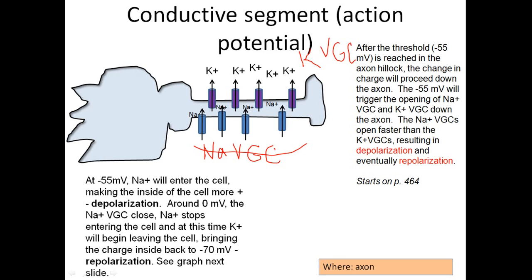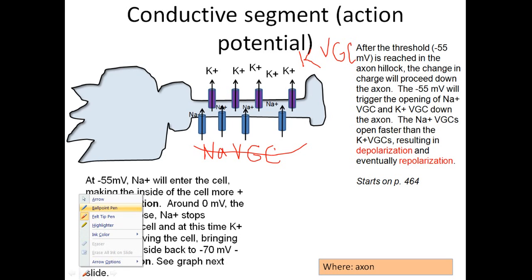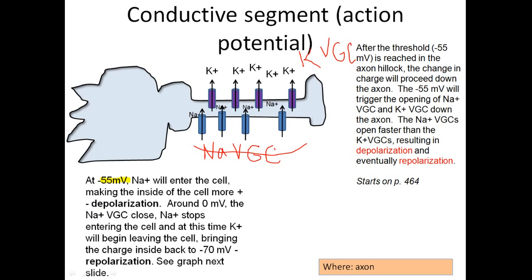When we hit negative 55 millivolts — that's our magic number, that's the threshold — that's the signal for the voltage-gated channels to open. What's going to happen is sodium is going to enter the cell, making the inside of the cell more positive.